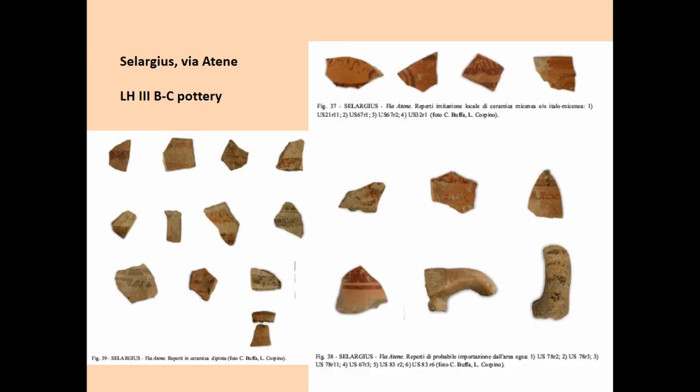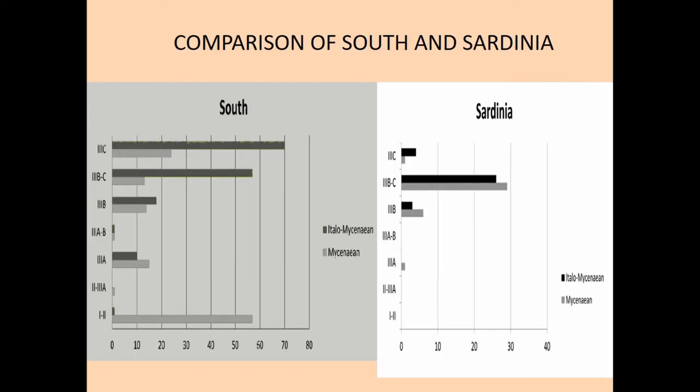This material is not yet attributed to local or imported categories, but it will perhaps help us understand much more about what is happening in Sardinia, which seems to be more and more important. When we compare what happens in the south of Italy — in the Gulf of Taranto and adjacent areas — in comparison with Sardinia, we can see abundant material around more or less the same late phases.